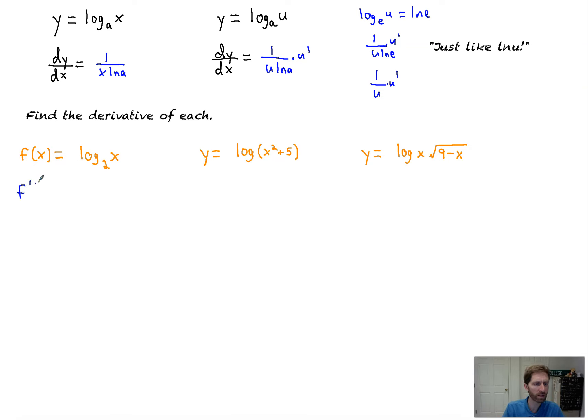So let's find the derivative of each. f prime of x is equal to, well, you got log base 2 of x. That's going to be 1 over x, just like the natural log, times the derivative of x is 1. Don't forget about your ln of 2 in the basement down there. That's it. Done.